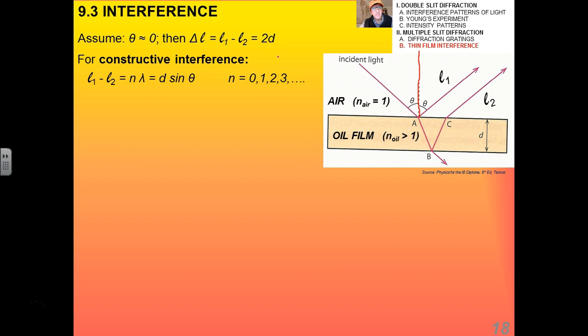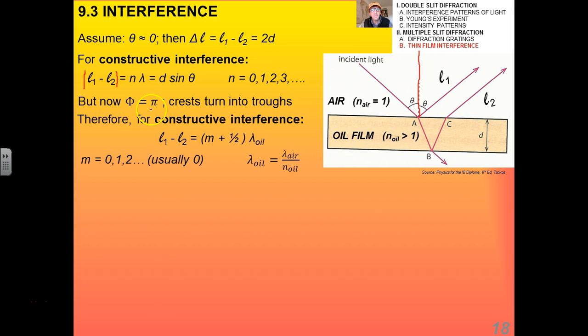Now, for constructive interference, we had the old condition equals N lambda, which is D sine theta, but now, the phase difference is π. We have crests turned into troughs. Therefore, for constructive interference, what we're going to have is we're going to have that the difference in path length is going to be M plus 1 half times the wavelength of the oil, the wavelength inside the oil, which I've denoted by lambda oil. We have a new integer counter, and we're calling it M so as to differentiate it from N, which was our integer counter before. And confusingly, the index of refraction also is denoted by little n. Please note that this N right up here is not the same N as the index of refraction. Very important.